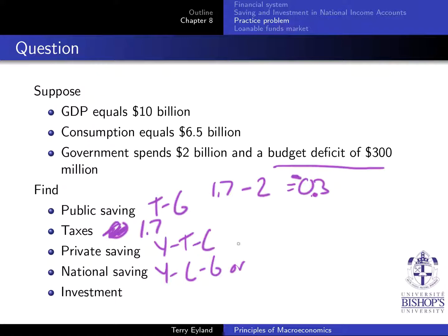How about private saving? It's going to be our GDP, which is equal to $10 billion, minus the taxes which equal $1.7 billion, minus $6.5 billion. So I have $8.2 billion subtracted from $10 billion, giving $1.8 billion as private saving.